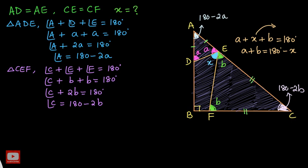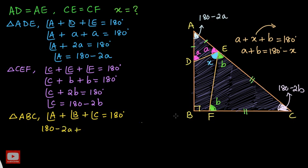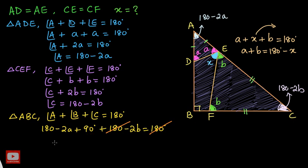Now I will take the big triangle ABC and apply the angle sum property. Angle A plus angle B plus angle C equals 180 degrees. Substituting: angle A is 180 minus 2A, angle B is 90 degrees, and angle C is 180 minus 2B. So we have (180 minus 2A) plus 90 plus (180 minus 2B) equals 180. Simplifying, 270 minus 2A minus 2B equals 0, which gives 270 minus 2(A plus B) equals 0.